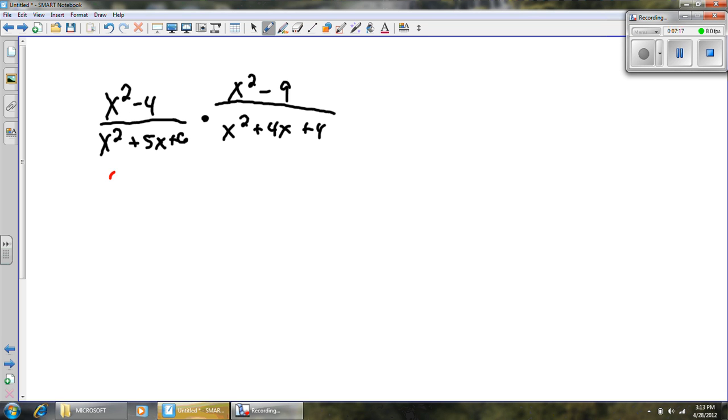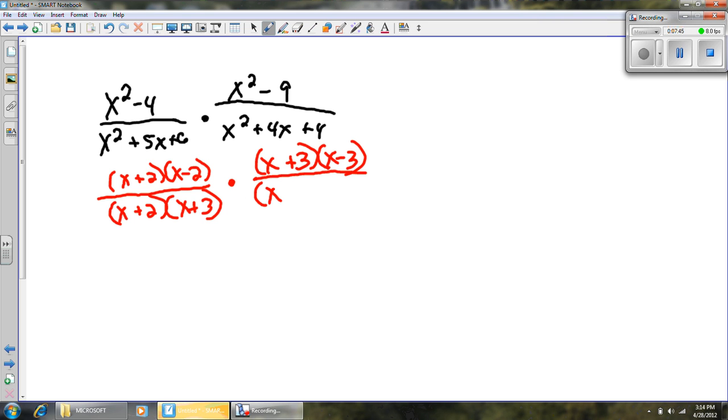My fractions become, my numerator becomes (x + 2)(x - 2) because that top form is the difference of squares. The denominator becomes (x + 2)(x + 3). Times the numerator of the second fraction. That's also a difference of squares. (x + 3)(x - 3). And the denominator, perfect square trinomial (x + 2). And I am going to write it twice instead of writing as a quantity squared. I think it will make a little more sense to you.